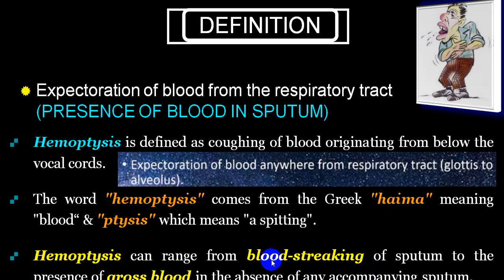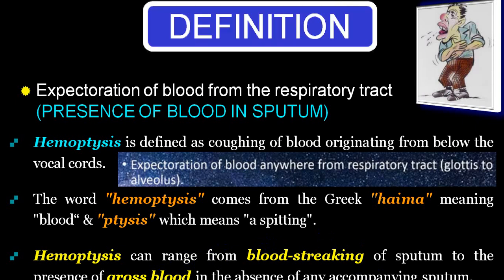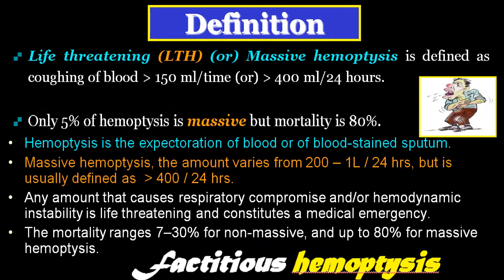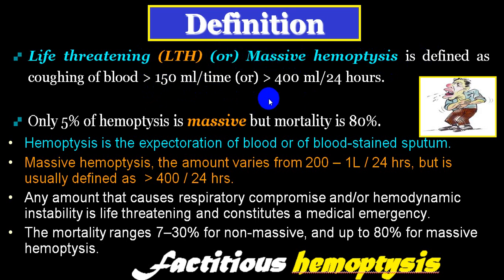Haemoptysis can range from a very small quantity — even microscopic, very difficult to identify — to a gross blood loss in sputum. We call the large quantity 'massive haemoptysis.' Life-threatening or massive haemoptysis is described as coughing of blood more than 150 ml at one time, or a total quantity of more than 400 ml in 24 hours.